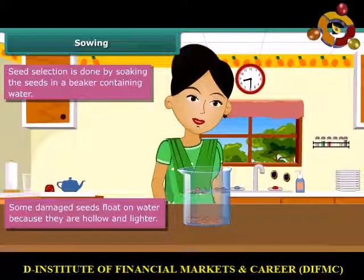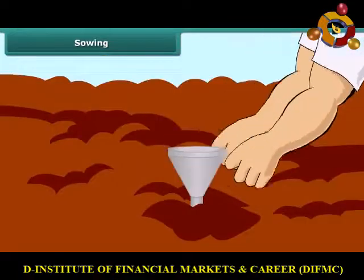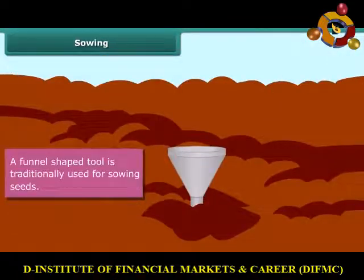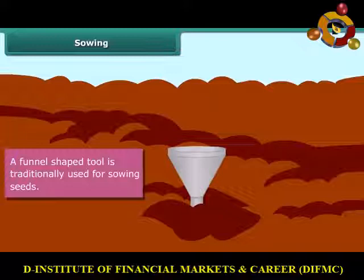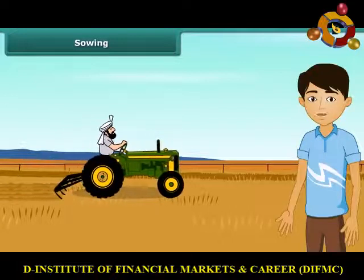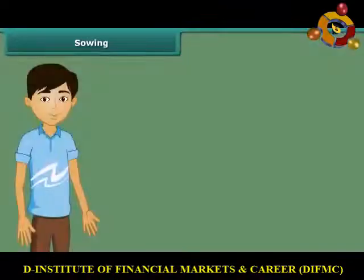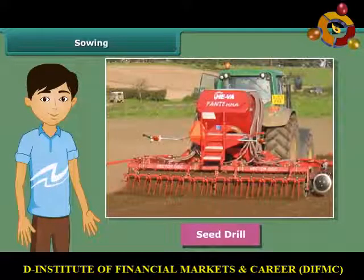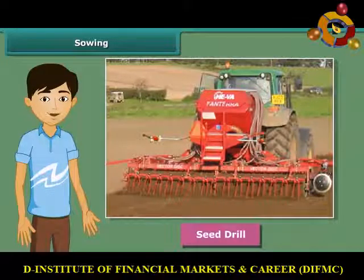Now let us see what tools are used for sowing seeds. This farmer has a funnel-shaped tool for sowing — he fills seeds into the funnel and passes them down through the sharp ends of the pipe to get them seeded in the soil. This is a traditional method and very easy. Nowadays, farmers use modern seed drills for sowing with the help of tractors. The seed drill sows seeds uniformly at proper distance and depth, ensuring that seeds get covered by the soil after sowing. This process also saves a lot of time and labor.